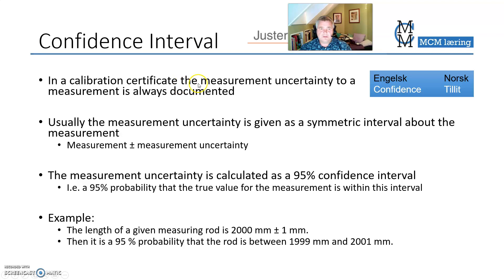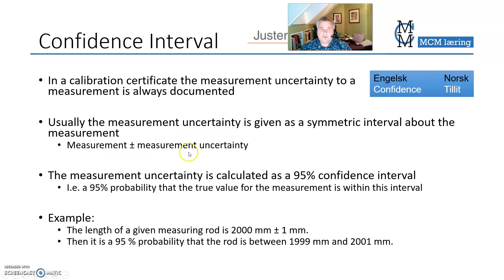The confidence interval is when you have a measurement, there is a certain uncertainty to that measurement, so you have the measurement plus minus the measurement uncertainty. For example, if you have a ruler, it can be half a meter long, but the true value is probably half a meter plus minus half a millimeter. Plus minus half a millimeter means the confidence interval — the probability that your measurement is within the given measurement uncertainty — is usually 95%.